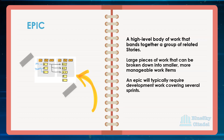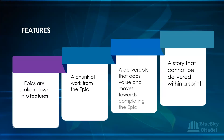An epic is a high-level body of work that bands together a group of related stories. You can put a number of stories together to form an epic. You can also describe an epic as large pieces of work that can be broken down into smaller, more manageable work items. An epic will typically require development work covering several sprints — in other words, an epic cannot be completed in one sprint.